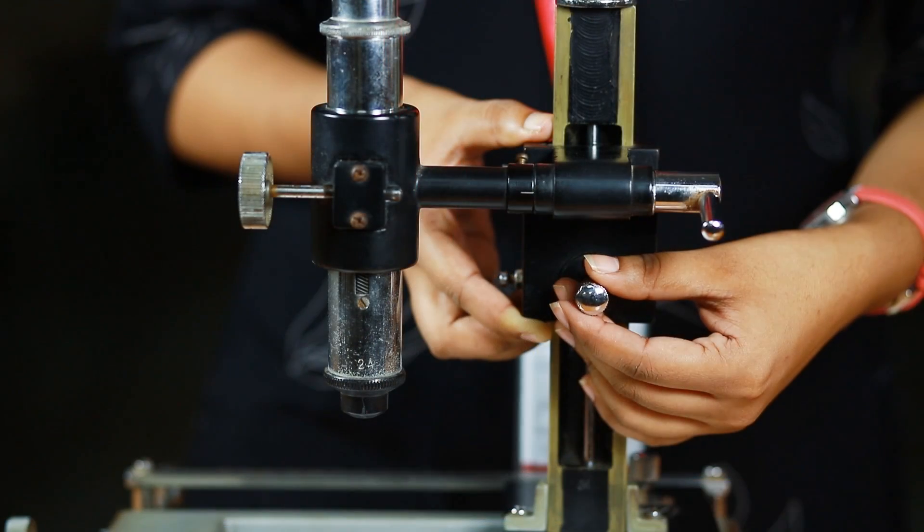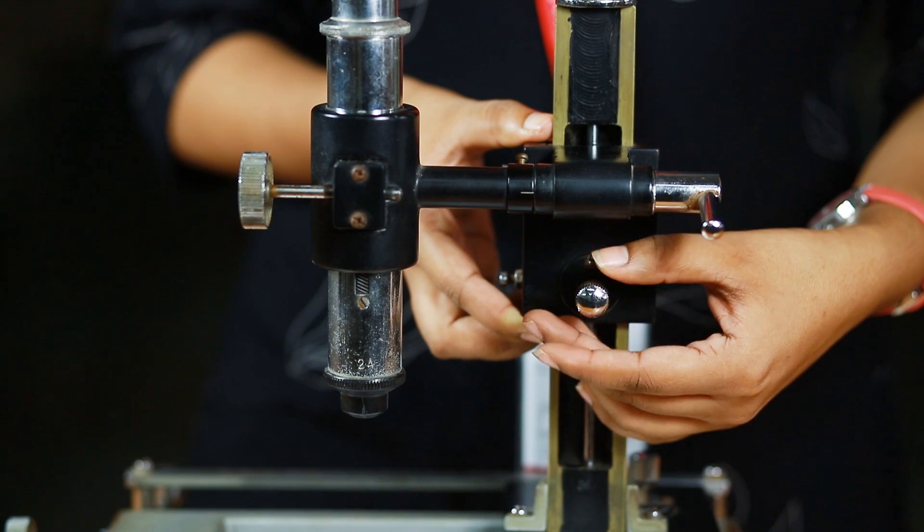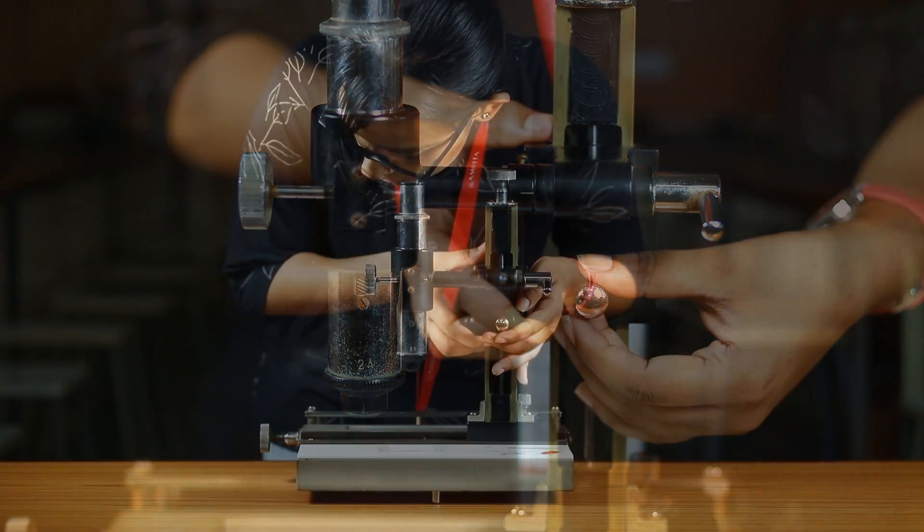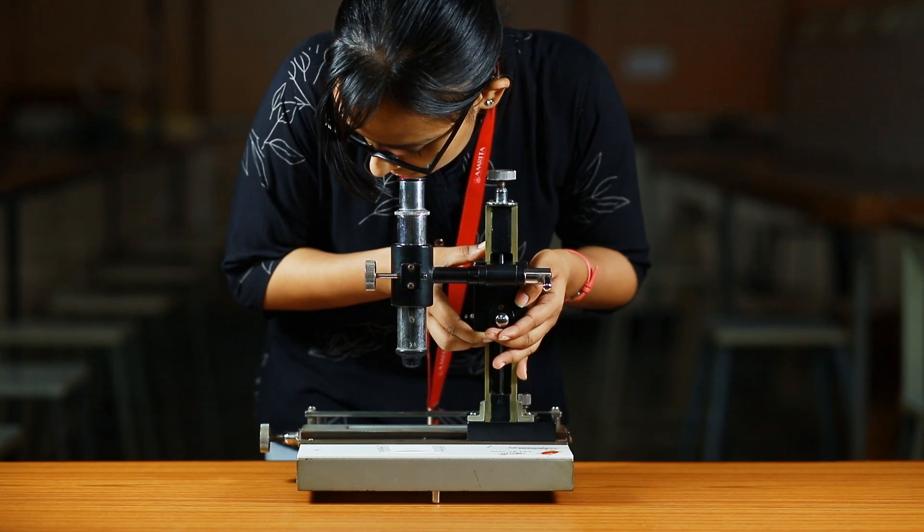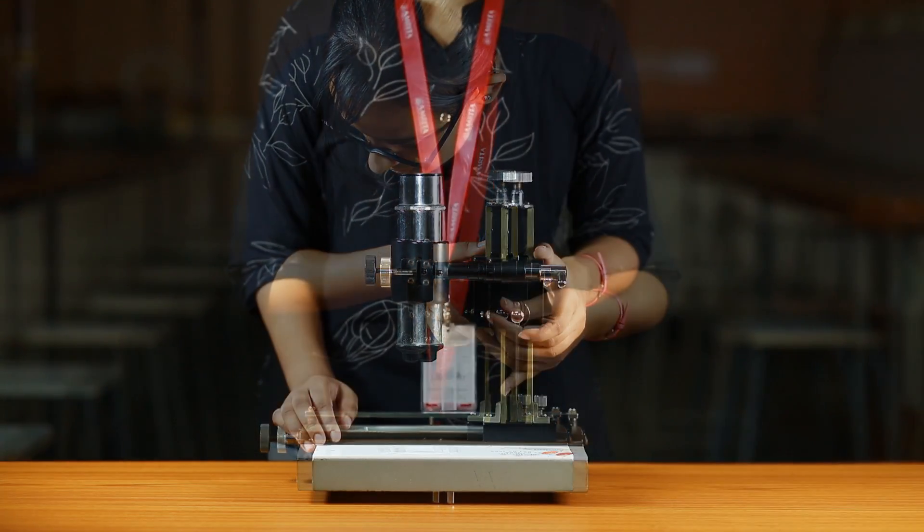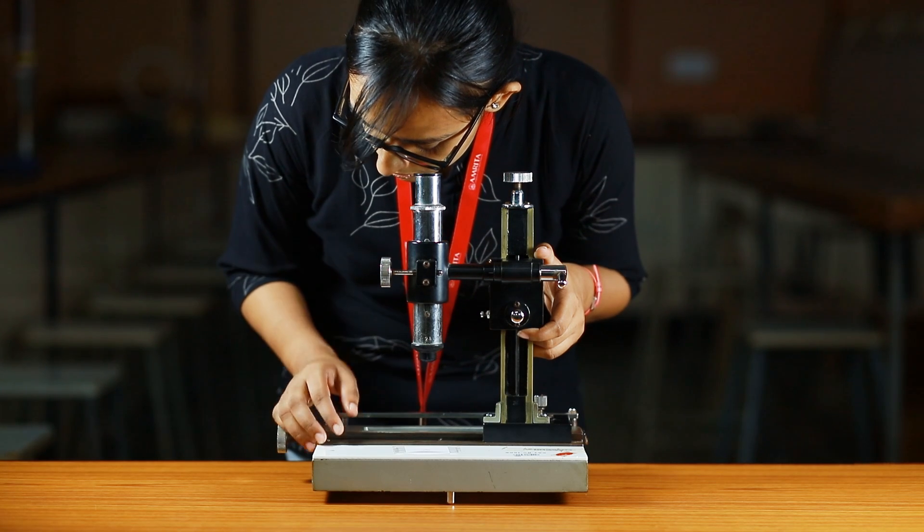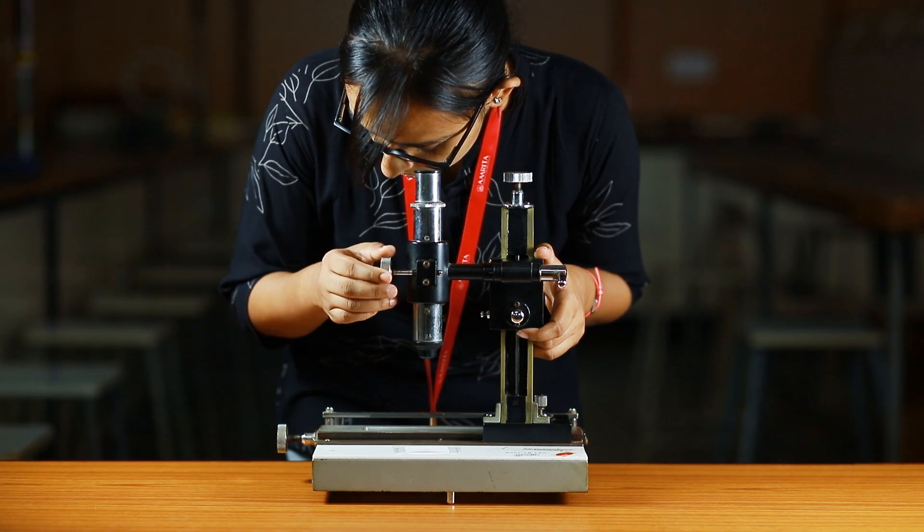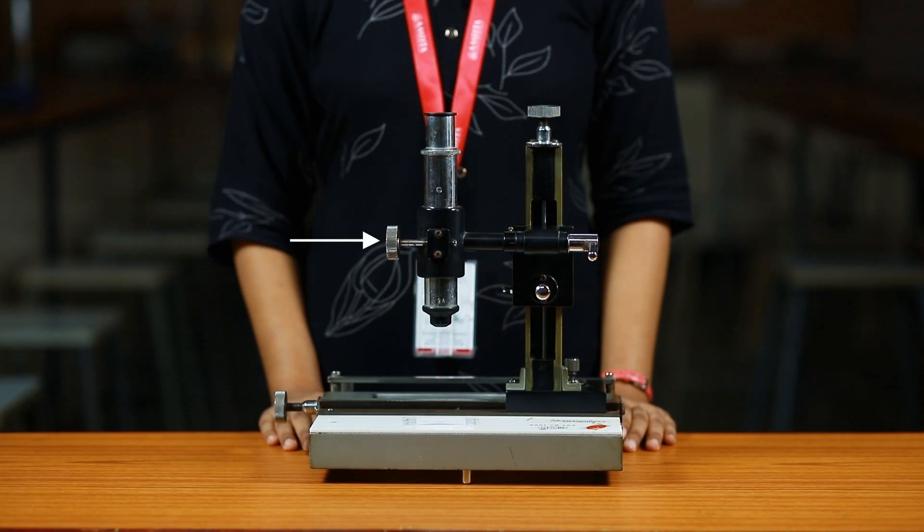Rotate the screw in front of the travelling microscope anti-clockwise to loosen it. Adjust the vertical position of the microscope and tighten it. For clear visibility of the cross wire, adjust the position of the eyepiece using the rack and pinion arrangement. Do not change this screw for the rest of the experiment.